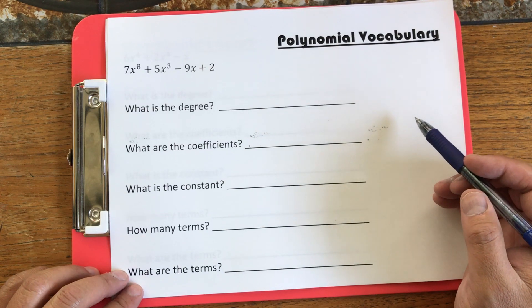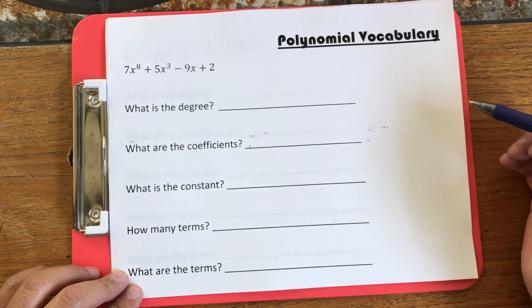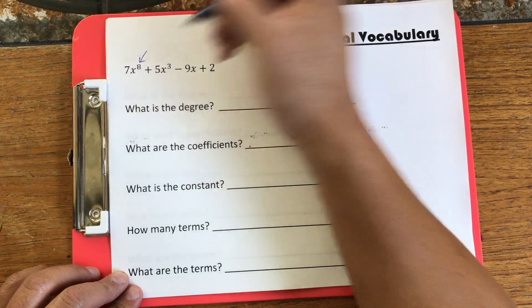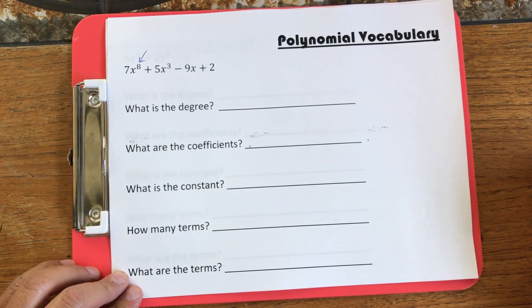The first question is what is the degree? The degree is the largest exponent in the polynomial. In this case, it's 8.